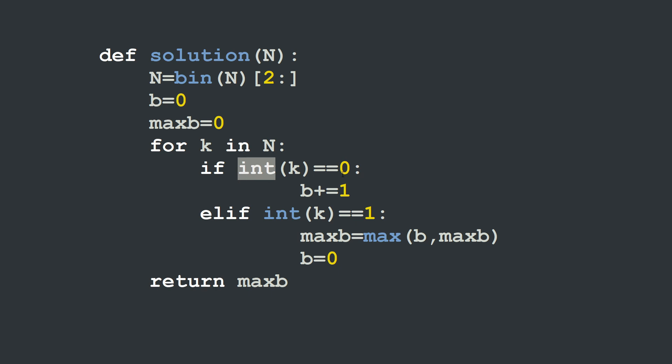Anyway, if k is equal to 0, then I will increment my zero counter, which is my variable b here, b plus equal to 1. And if not, if k is equal to 1, my maximum will become equal to the maximum value between b and maxb. So maxb will always hold the maximum value or the highest value that was reached by b. And then I will reset b to zero.